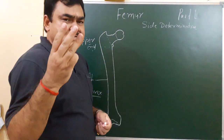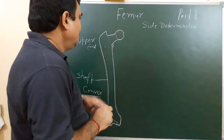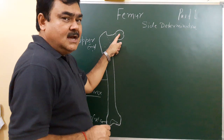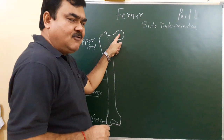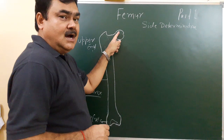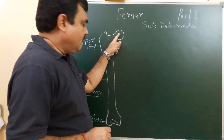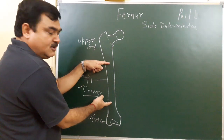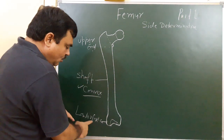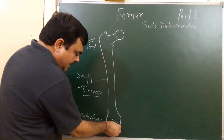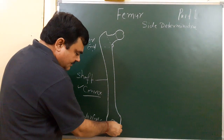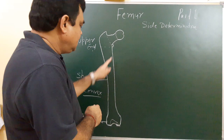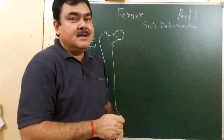First, the head is directed medially, upward, and slightly forward. Second, the shaft is convex forward. Third, the inferior surface of the lower end lies in a horizontal plane. By these three points you can easily determine the side of the femur.